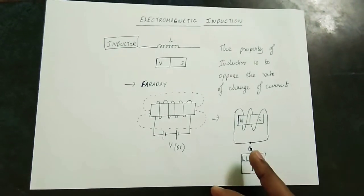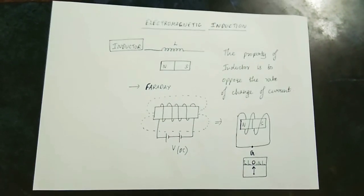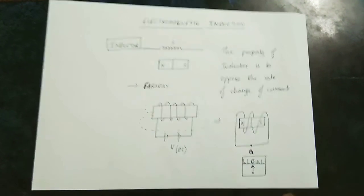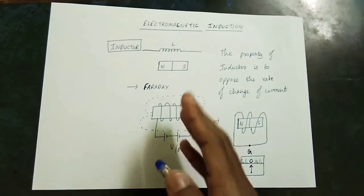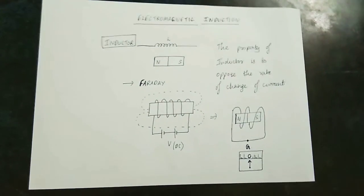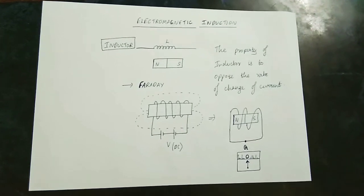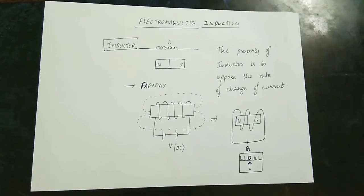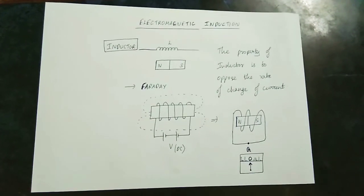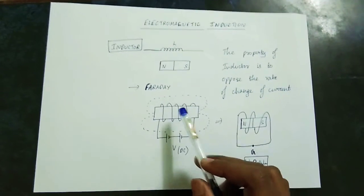There is a galvanometer — the instrument which is used to measure the current flow in a circuit or conductor.